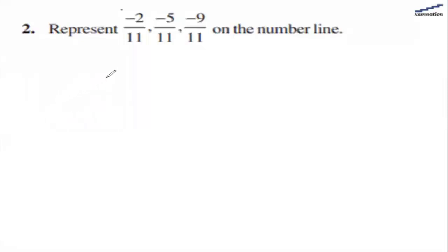So in this question, we're asked to represent these numbers on the number line. As you can see, these are all rational numbers with a denominator of 11.